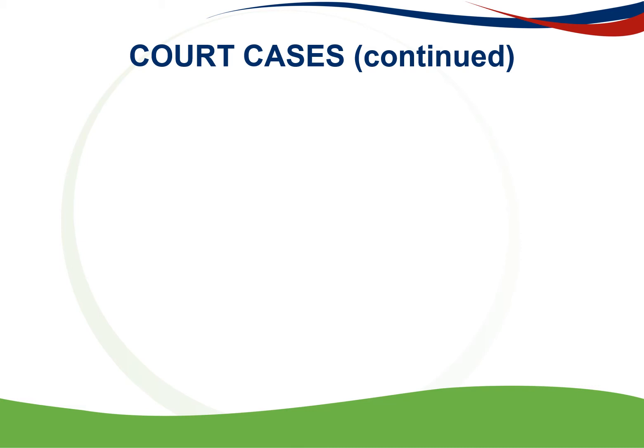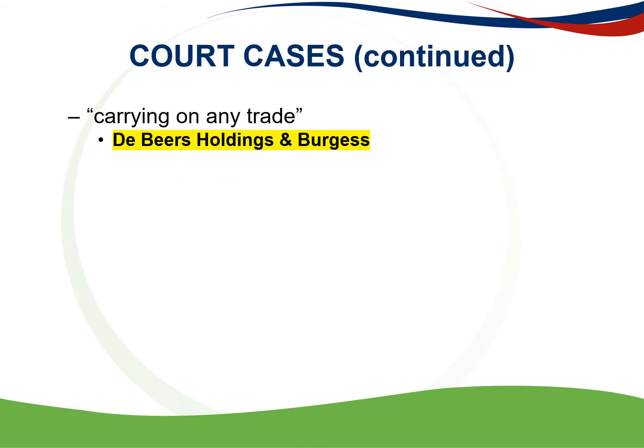The following court cases are not all the court cases used to support the requirements of the general deduction formula; however, they are definitely the most referred to. The first requirement — carrying on any trade — De Beers Holdings: it was held that the absence of a profit does not necessarily exclude a transaction from being part of a taxpayer's trade. In the Burgers court case, it also states that the fact that there is no continuity, or there is a lack of profit motive or risk, does not necessarily mean that a trade is not being carried on. However, the taxpayer's burden of proof increases when one or the other element is not present.